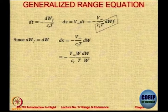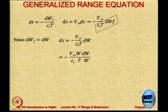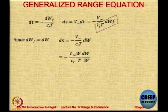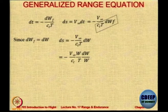Now, because it is level flight, T equals D and L equals W. So the W in the numerator is replaced with L, and the T in the denominator is replaced with D. That gives us the elemental or generalized range equation: the distance travelled in small elemental time dt equals the velocity of the aircraft divided by the thrust specific fuel consumption, multiplied by lift-over-drag, multiplied by dW/W.